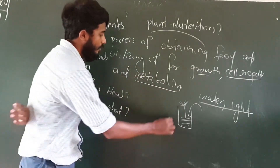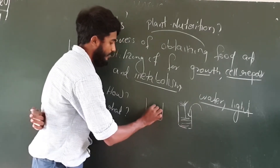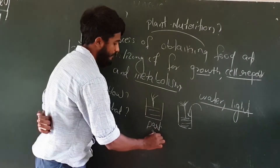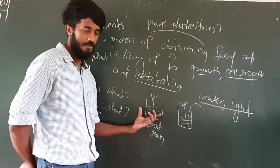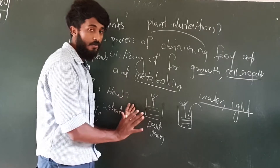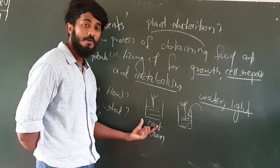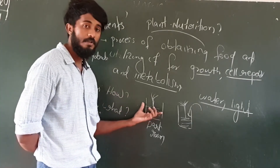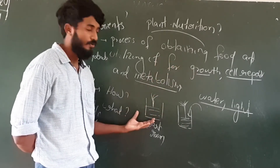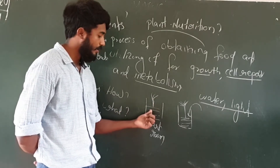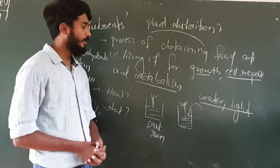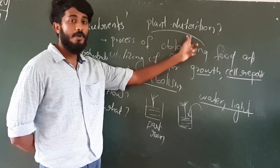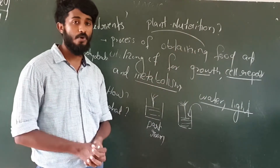Instead, suppose you change the position of this plant and keep it in a dark room. What will happen? This plant is not getting sunlight, and you are also not providing water to this plant. So what will happen? If you are not giving water, the plant is not getting nutrients. So growth is not possible, self repair is not possible, and metabolism is not possible. Finally, this plant will die. So in short we can say that for the growth of the plant, nutrients are very essential, and nutrition must take place. Nutrition is very important.